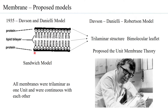If there is a second membrane layer, it will also be trilaminar. If there is a third layer, it will also be trilaminar. Each unit will always be trilaminar, as Robertson suggested in his model.